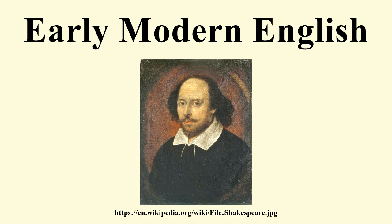The perfect of verbs had not yet been standardized to use uniformly the auxiliary verb 'to have'; some took as their auxiliary verb 'to be', as in this example from the King James Bible: 'But which of you will say unto him, when he is come from the field, go and sit down?' (Luke 17:7). The rules that determined which verbs took which auxiliaries were similar to those still observed in German and French.